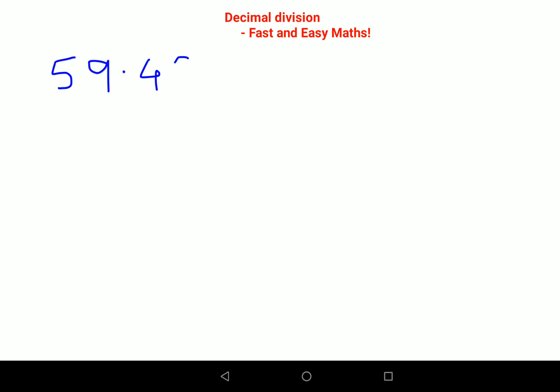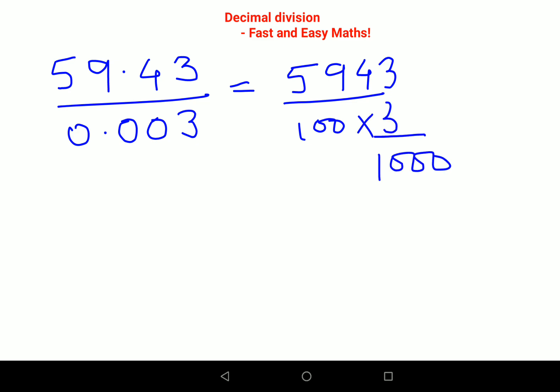Next let's try for bigger values. Let's say if we had to do something like this: 59.43 upon 0.003. Towards the end I'll explain why a lot of you get confused or what are the scenarios where this method will be super helpful. So please stick around till the end. This can now be written as 5943 upon 100 into 3 upon 1000.